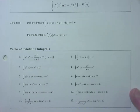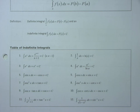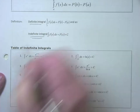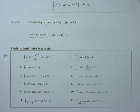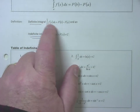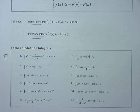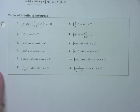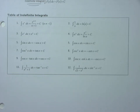An integral with bounds is called a definite integral — you read it as 'the integral from a to b of f(x) dx.' An integral without bounds is called an indefinite integral — you just say 'the integral of f(x) dx.' These formulas from Chapter 4.9 are a continuation from Calculus 1 into Chapter 5.